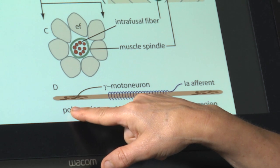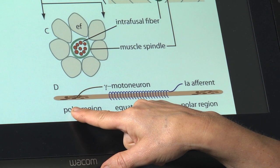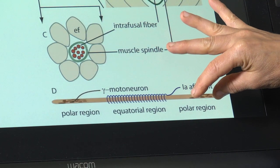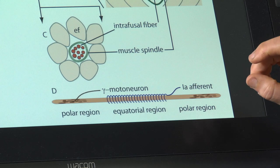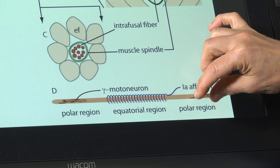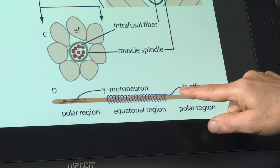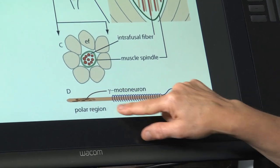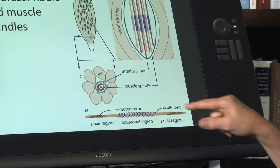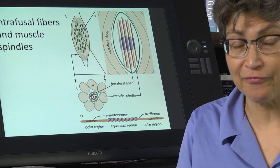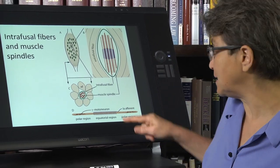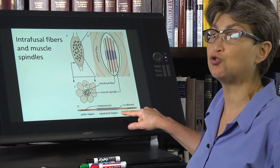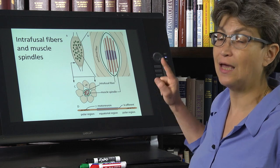what you see is that there are two polar regions separated by an equatorial region. The polar regions are the part of the intrafusal fiber that are muscle-like. These are the only places where this fiber can actually contract. So the contractile part is the polar regions. The equatorial region is not contractile. And it is at this equatorial region that there is a special afferent, a special sensory nerve that has an ending that just wraps right around the equatorial region and is going to be sensitive to stretch of that equatorial region.